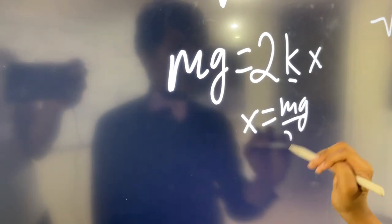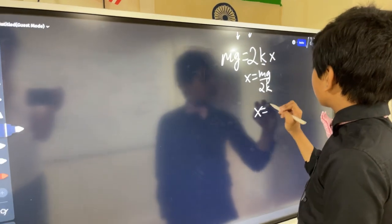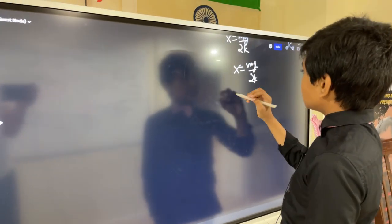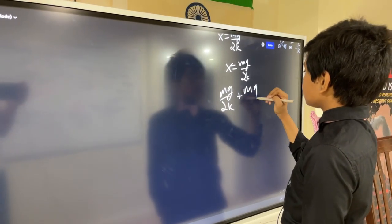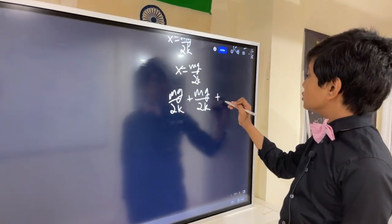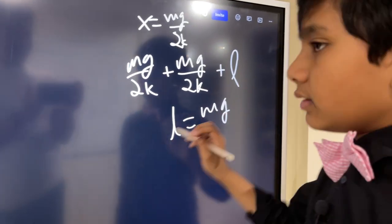And we have an identical case on the other side. It's going to pull down the spring by MG over two K as well because it's in the same circumstances. So that means that the total X is these displacements added together plus the unstretched length. So it becomes L plus MG divided by K.